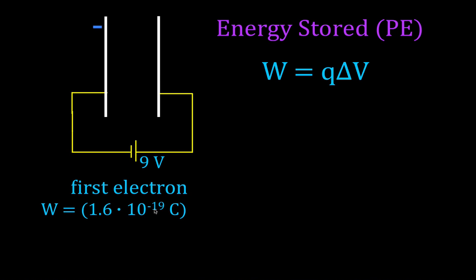For the first electron, the charge is 1.6 × 10⁻¹⁹ coulombs. The question is: what potential difference was that charge moved through? We have a 9-volt battery, and right when we close the switch the charges start to move. But the very first electron — when it is moved from one plate to the other — there is no potential difference between those plates. So we have charge but no potential difference. The work equals the charge times the potential difference, and that charge was moved through no potential difference. So the work it takes to move the first electron is zero joules.